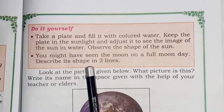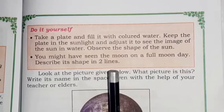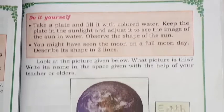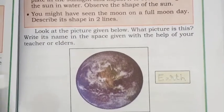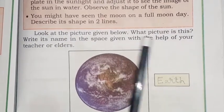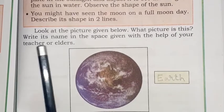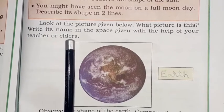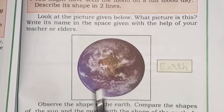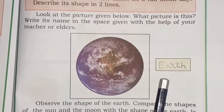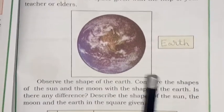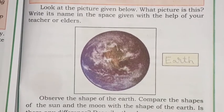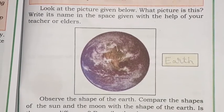Describe the moon's shape in two lines. Now we'll look at the earth. Look at the picture given below — what picture is this? Write its name in the space given with the help of your teacher or elders. This is the earth, so write 'earth' here. The shape of the earth is spherical — that is, a round shape.